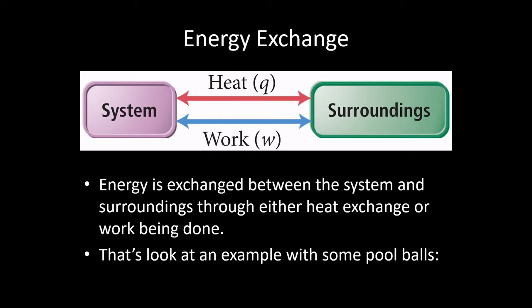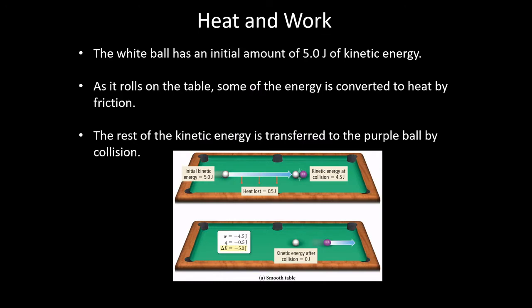We know the system and surroundings can exchange energy using heat and using work. Let's look at an example here using some pool balls and a pool table. So let's say we have our cue ball, which is the white ball there, and we hit it with enough energy to give it 5 joules of kinetic energy. So it rolls along the table with 5 joules of kinetic energy, and it's going to hit the purple ball.